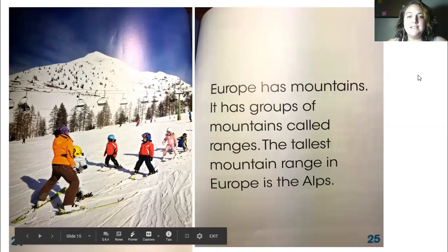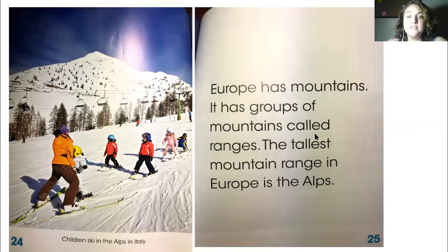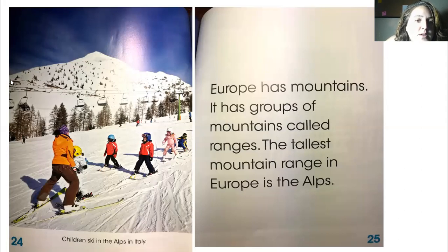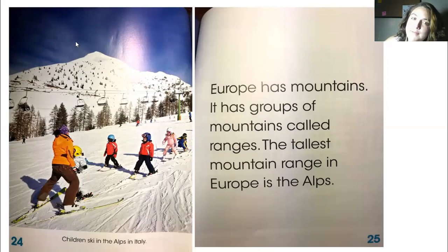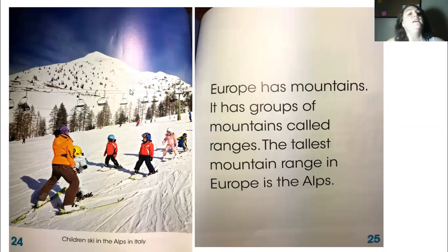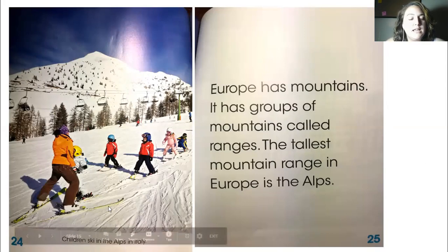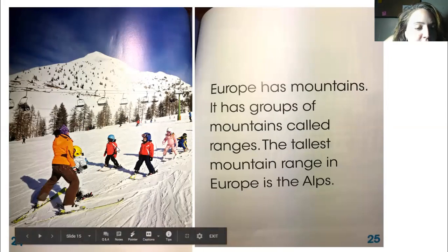Europe has mountains — groups of mountains are called ranges. The tallest mountain range in Europe is the Alps. The very top of a mountain is called a peak. This peak is covered in lots of snow, so it must be very cold at the very tops of mountains.